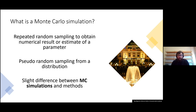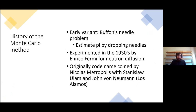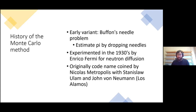There are slight differences in terminology in the literature between Monte Carlo simulations and Monte Carlo methods, but today I'll mostly focus on Monte Carlo simulations. The history is quite interesting — one of the earliest variants was Buffon's needle problem, where you could estimate pi by dropping needles. The first true Monte Carlo simulation was done by Enrico Fermi to understand neutron diffusion. Researchers at Los Alamos working on nuclear weapons coined the code name 'Monte Carlo', termed by Nicholas Metropolis and John von Neumann.